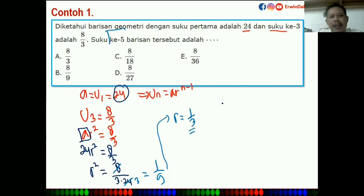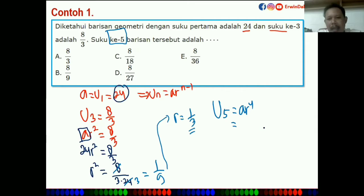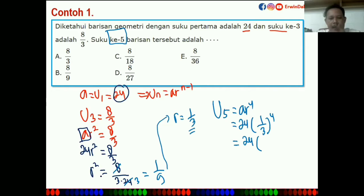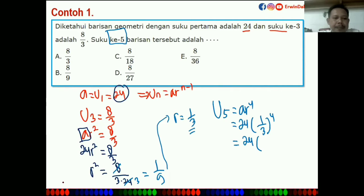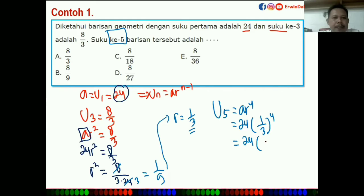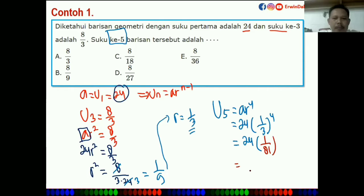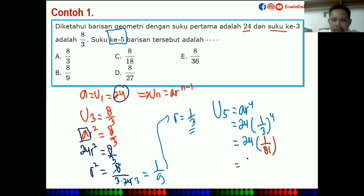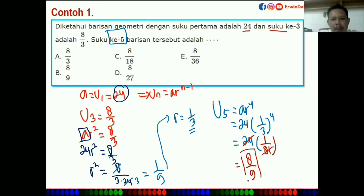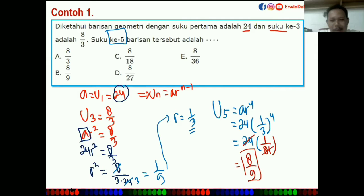Yang ditanya adalah suku kelima. U5 = AR⁴ = 24 × (1/3)⁴. (1/3)⁴ = 1/81. Maka 24/81 — sama-sama dibagi 3 — hasilnya 8/27. Jadi jawabannya 8/27.